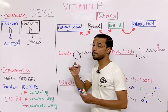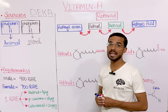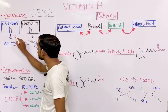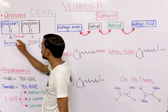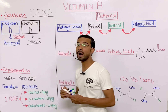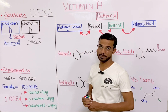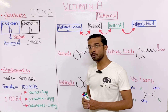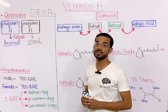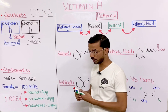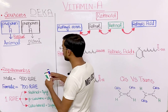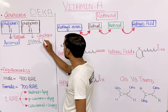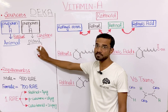Preformed Vitamin A is actually retinol — the active form of Vitamin A. Proformed Vitamin A is not the active form; it will first convert into the active form and then be utilized in our body. Proformed Vitamin A is present in the form of carotene, which is found in plants.